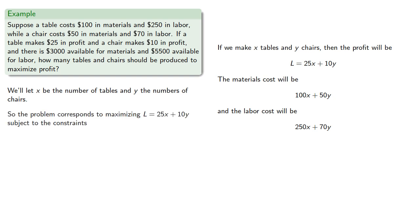Now we want to maximize the profit subject to the constraints that the materials cost less than or equal to $3,000, and the labor is less than or equal to $5,500. So we're trying to maximize a linear objective function over a set of linear constraints.